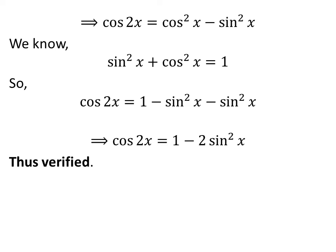Further simplification gives us cosine of 2 times x is equal to 1 minus 2 times square of sine of x. Hence, verified the identity.